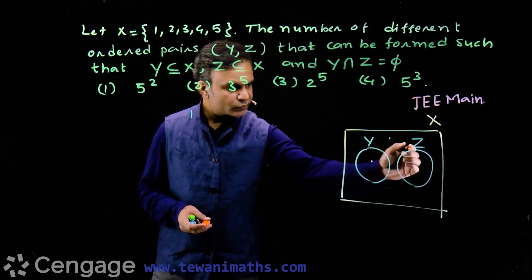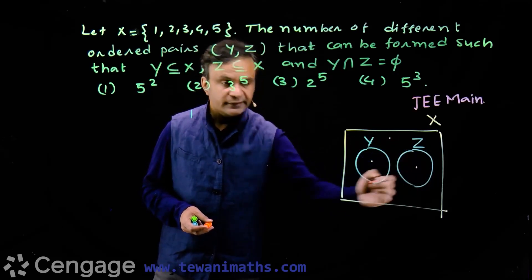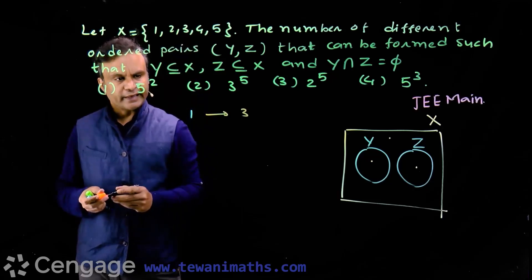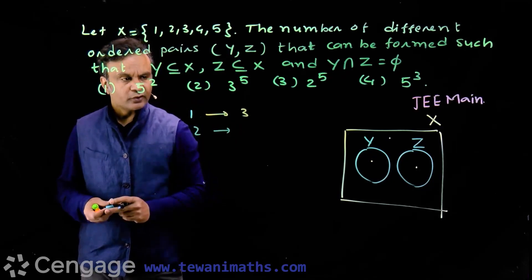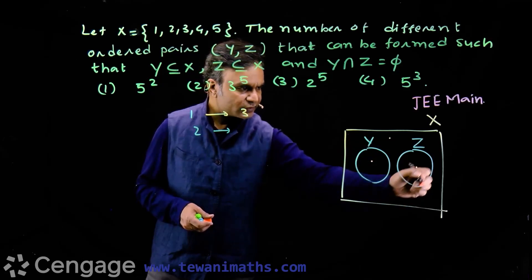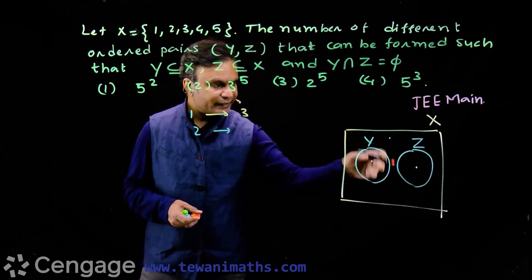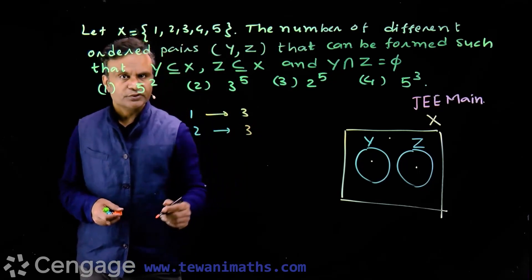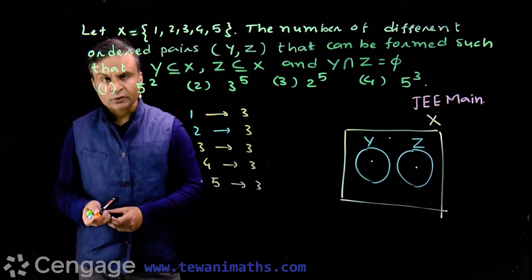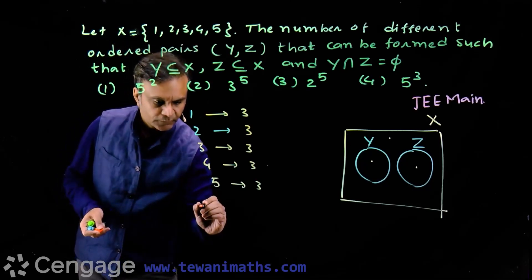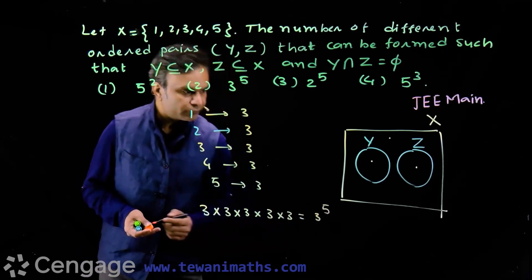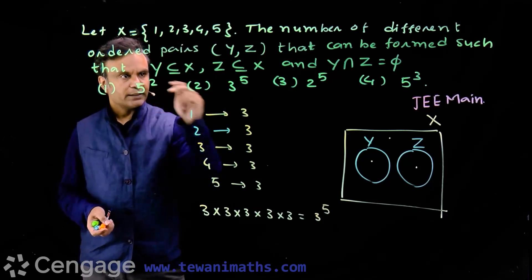The three options are: put the element in set Y, put it in set Z, or put it in the outer region of X but not in Y or Z. So for each element of set X, I have three options. Similarly for element 2, I again have three options. So total number of options is 3×3×3×3×3 = 3⁵. Therefore, the total number of ordered pairs is 3⁵.